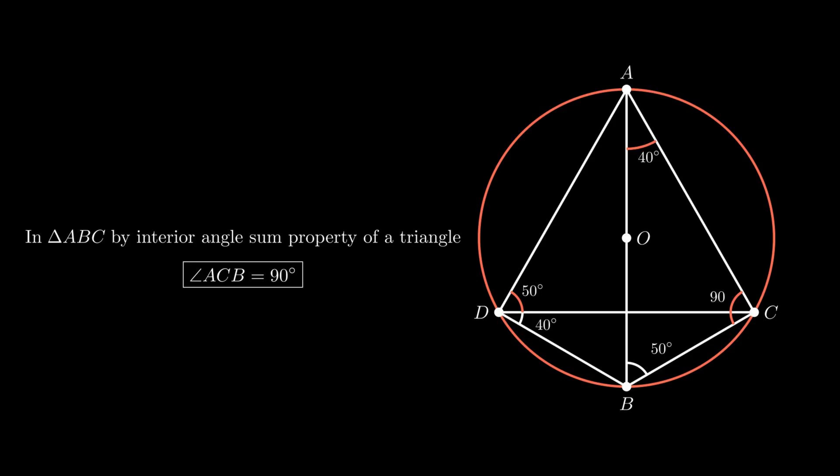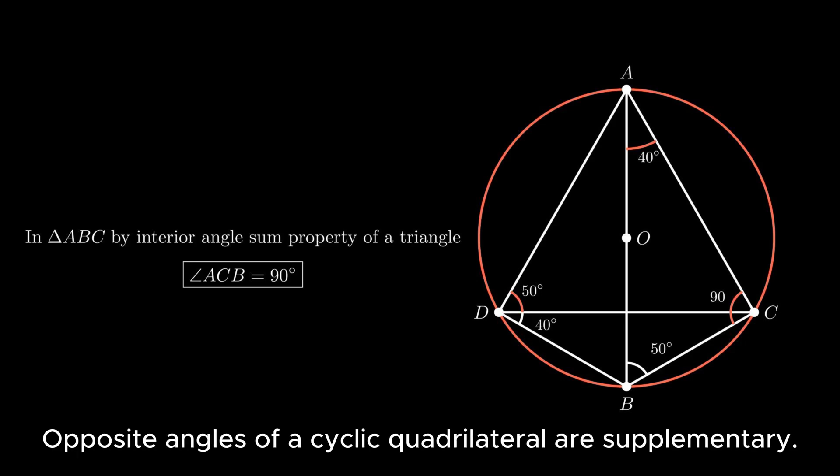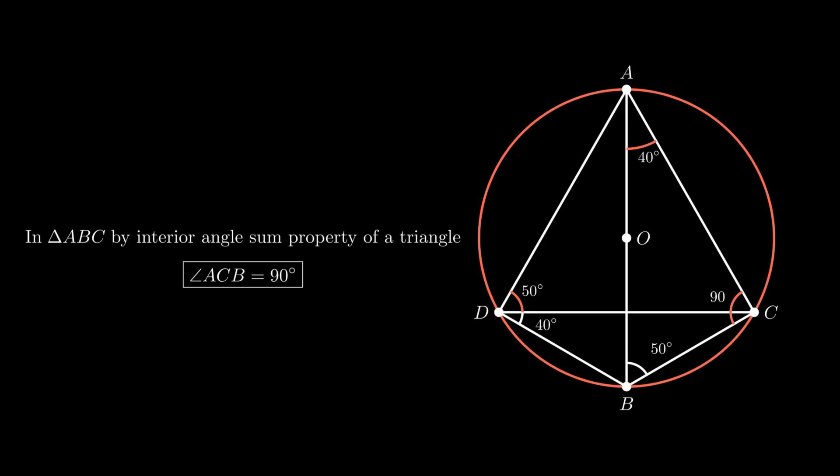Here to find angle ACB, you can also use the theorem related to the cyclic quadrilateral, that is, opposite angles of a cyclic quadrilateral are supplementary, which on simplification will give you the same result.